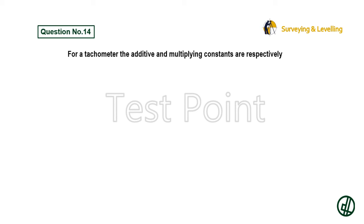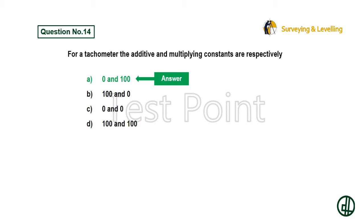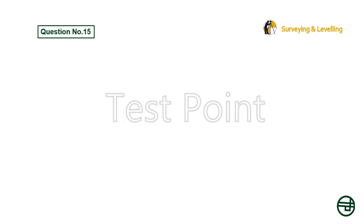Question 14: For a tachometer, the additive and multiplying constants are respectively — Option A: 0 and 100. Option B: 100 and 0. Option C: 0 and 0. Option D: 100 and 100. Answer is Option A: 0 and 100.